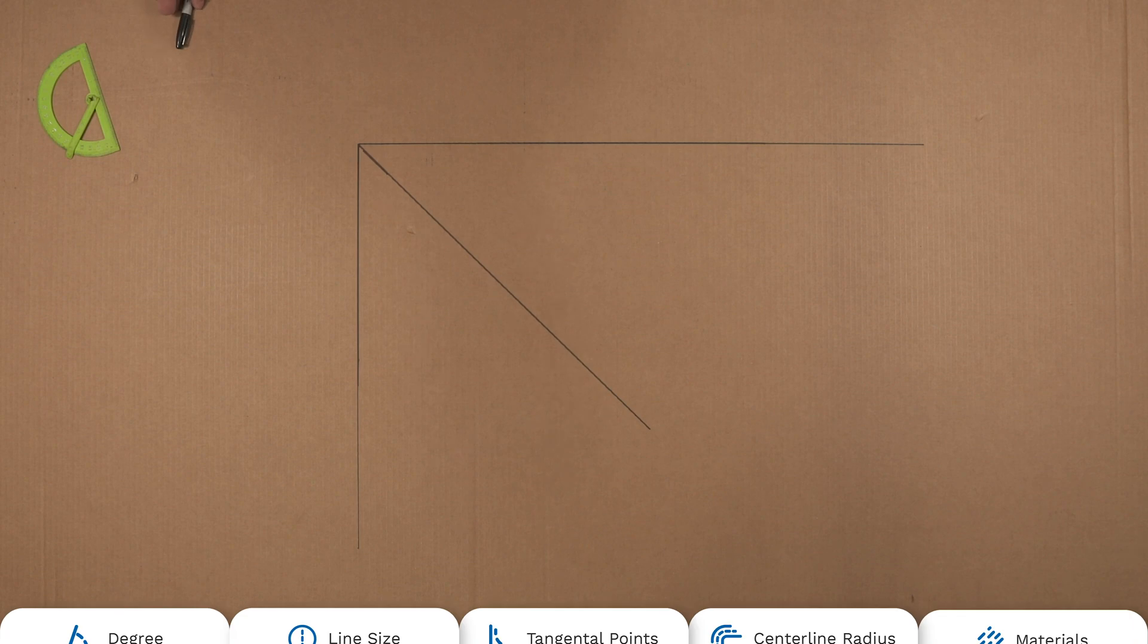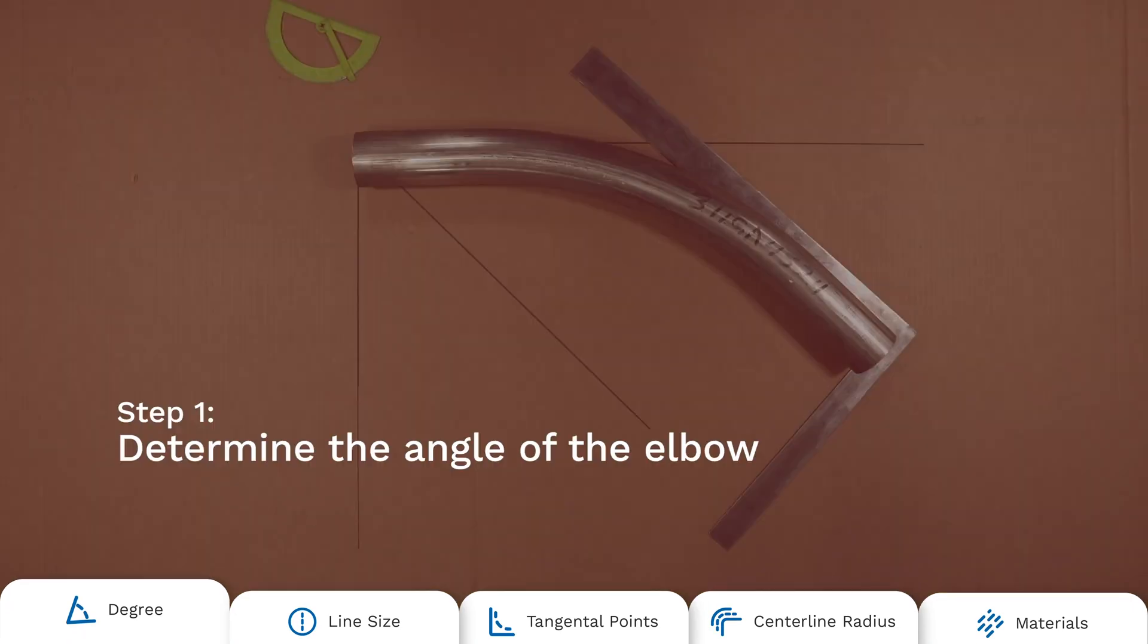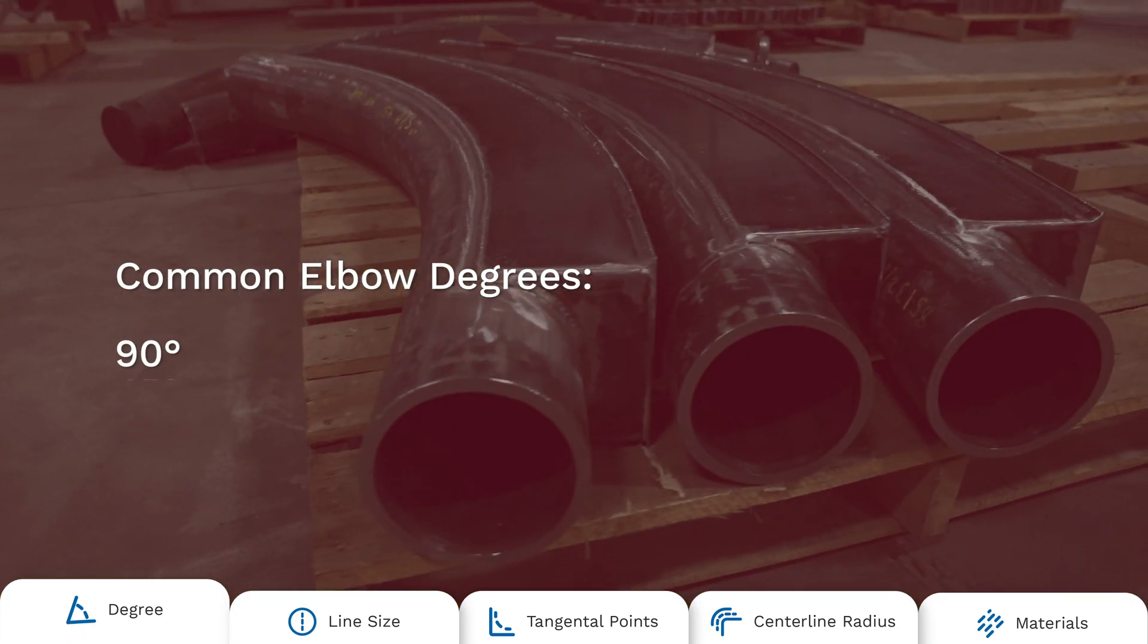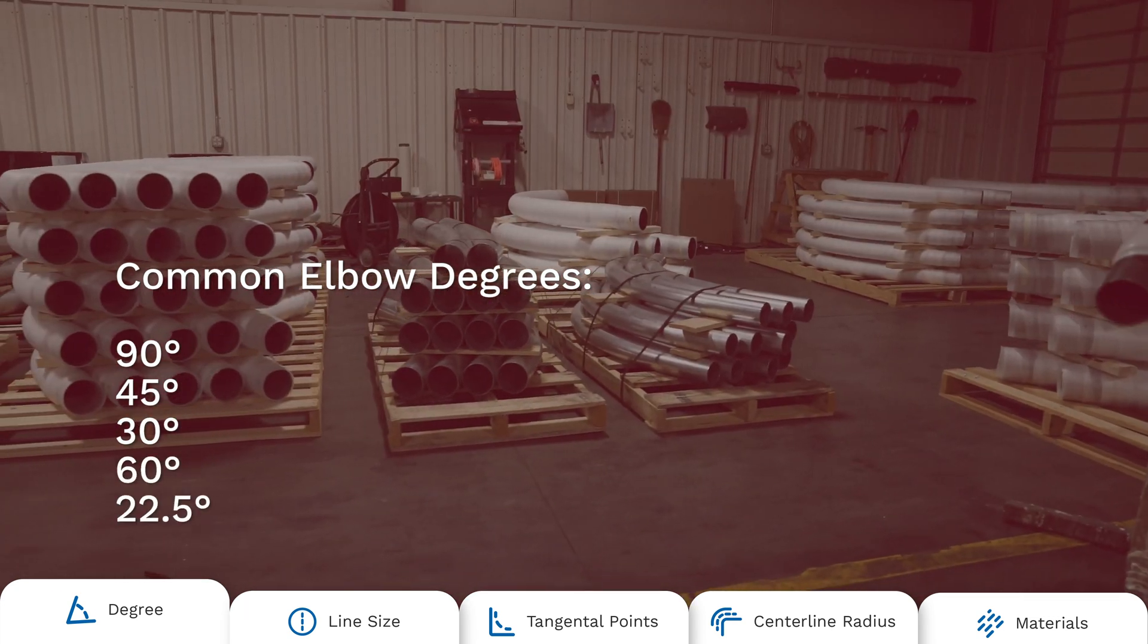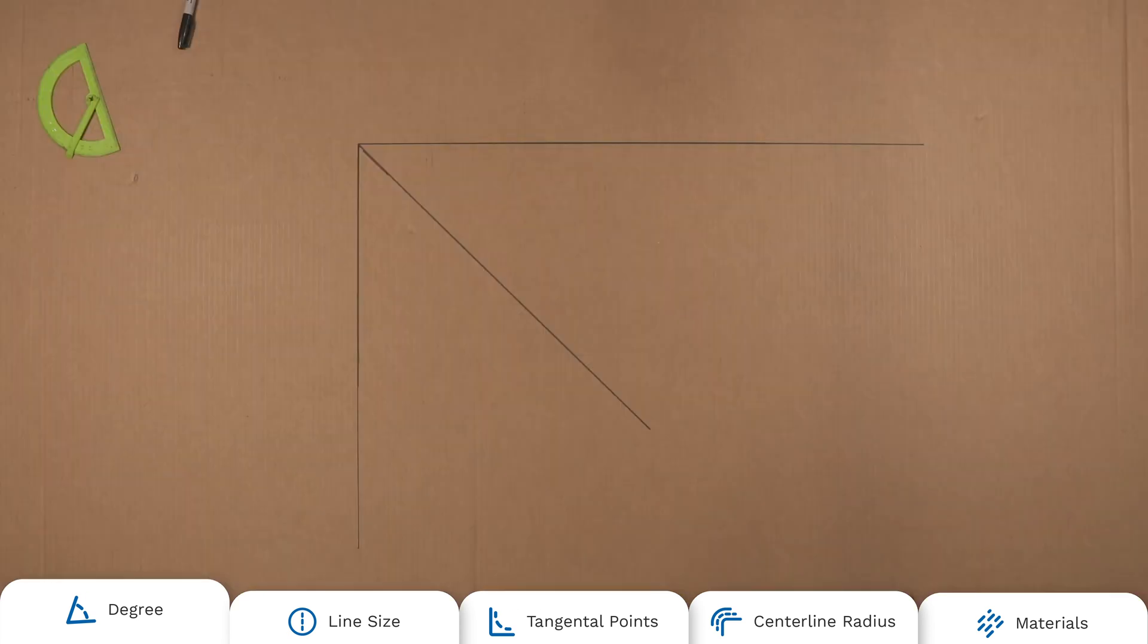Now you're ready to start measuring your elbow. First, you need to determine the angle of the elbow. 90, 45, and 30 degree angles are the most common, but sometimes you'll find a 60 or 22 and a half degree angle. To do this,